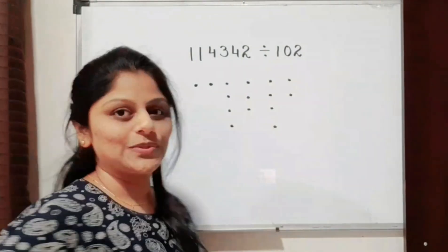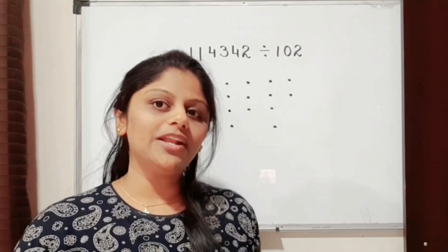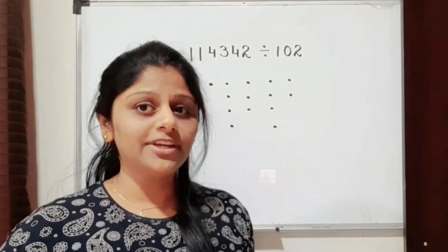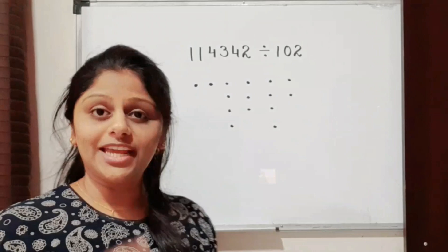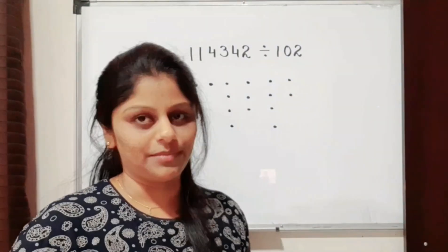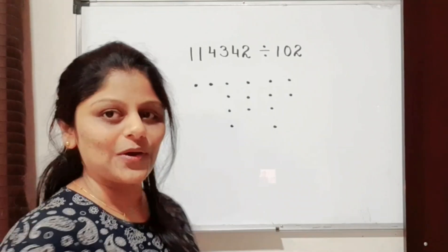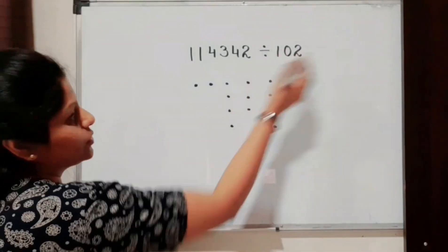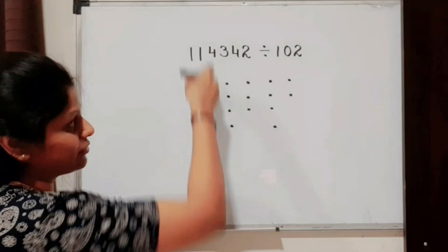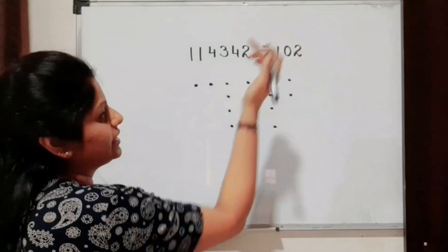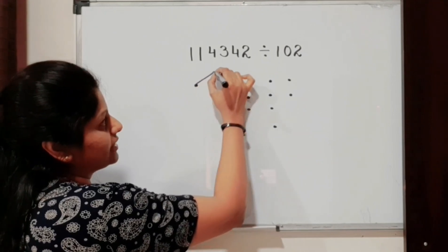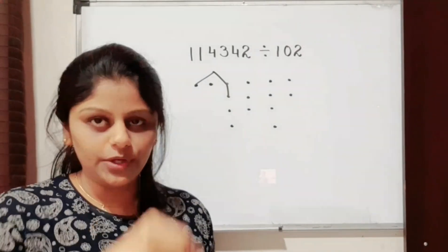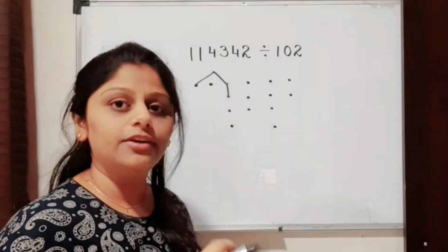The divisor is 102. In previous examples we saw that for 12 we took one dot and two dots, and for 13 we took one dot and three dots. But here we have a zero. So in the first column take one dot, in the second column leave it — because it is zero we take no dots from that column — and in the third column take two dots and join them all. Zero means no dots; we simply skip that column.